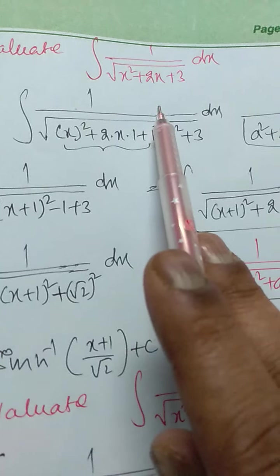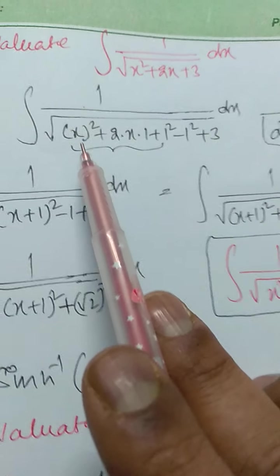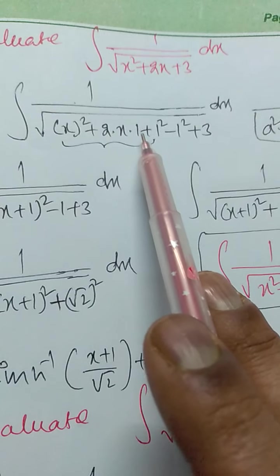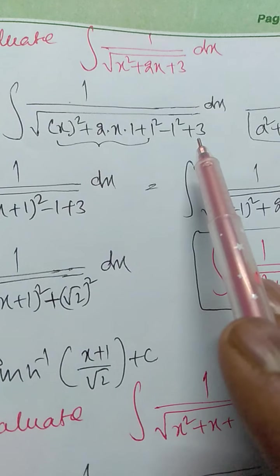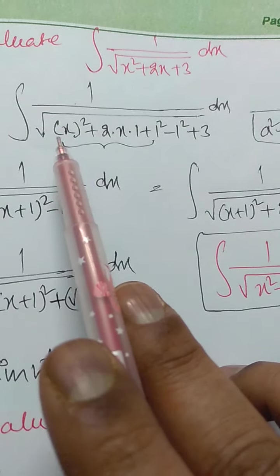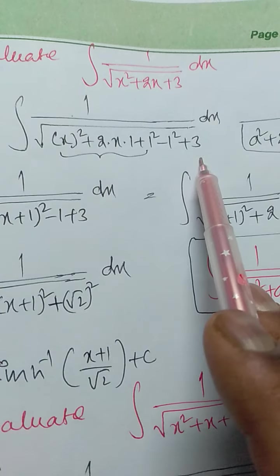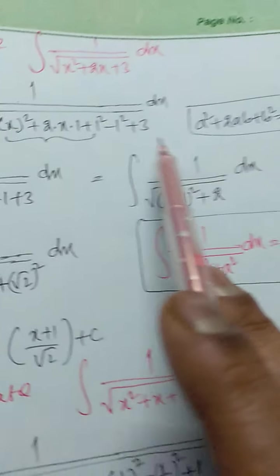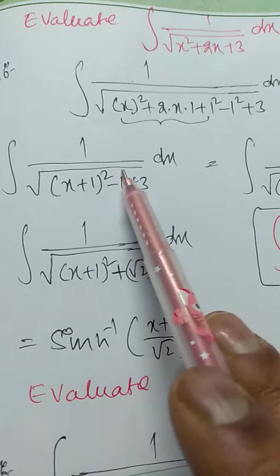Now x squared plus 2x can be written as a squared plus 2ab, that is x whole square plus 2 into x into 1, where the b value is 1. So adding and separating by 1 squared: x squared plus 2 into x into 1 plus 1 squared minus 1 squared plus 3. This is in the form of a squared plus 2ab plus b squared, that is a plus b whole square.